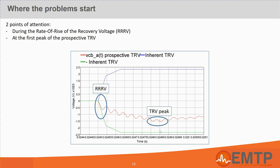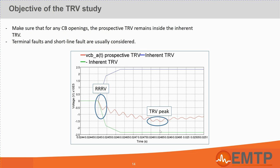The engineering objectives during a TRV study is to make sure the circuit breaker will successfully open in any situation. In other words, it is to make sure the prospective TRV remains inside the inherent TRV. As we will see later on in this tutorial series, the analysis will be based on worst-case scenarios. One, giving the worst rate of rise of the recovery voltage. This will be by simulating a single-phase short-line fault. One, giving the worst TRV peak by simulating a three-phase terminal fault. In all cases, we will consider the circuit breaker opens right at the current zero crossing.